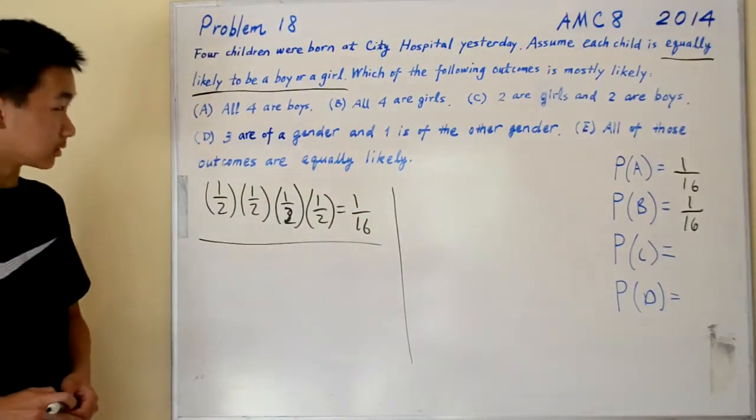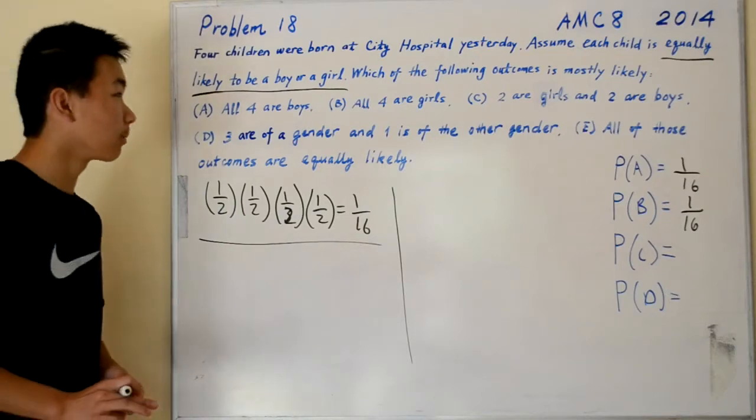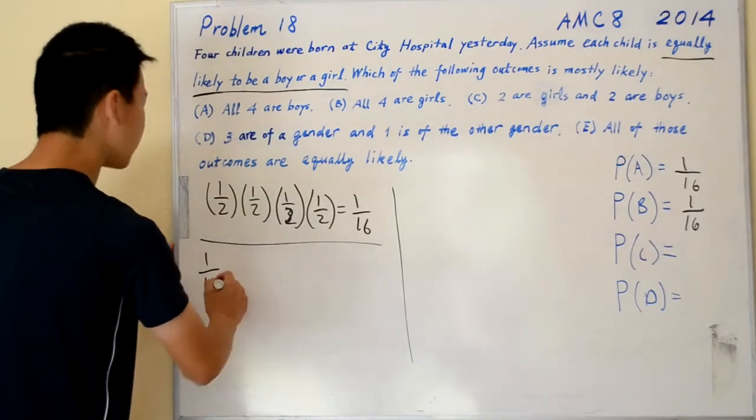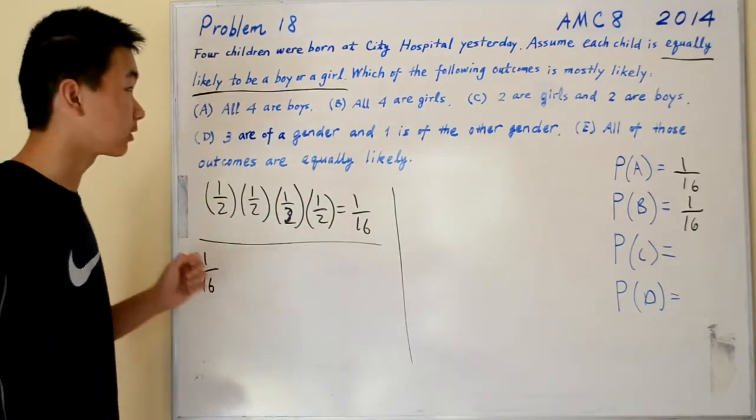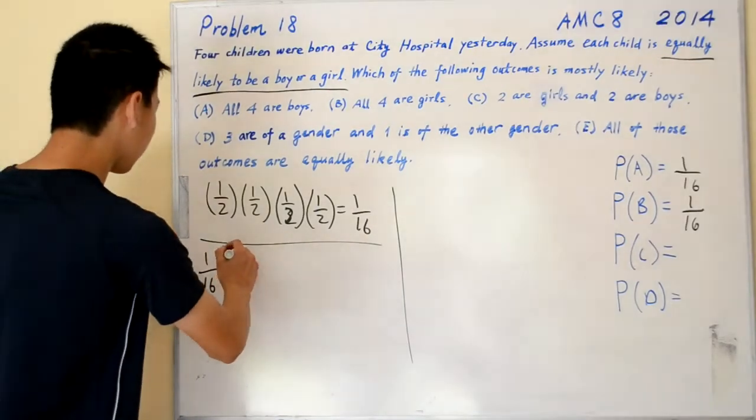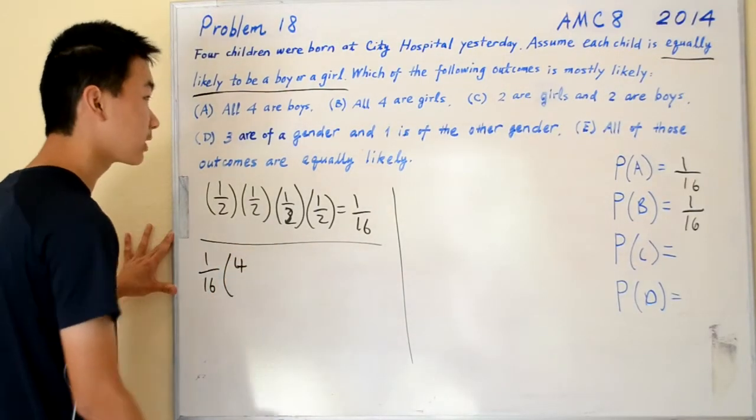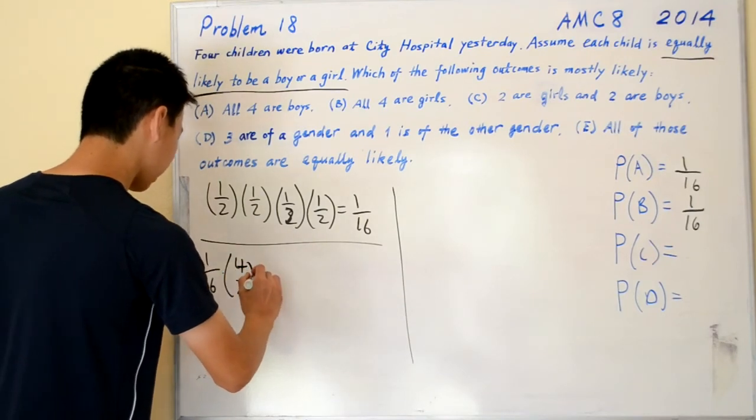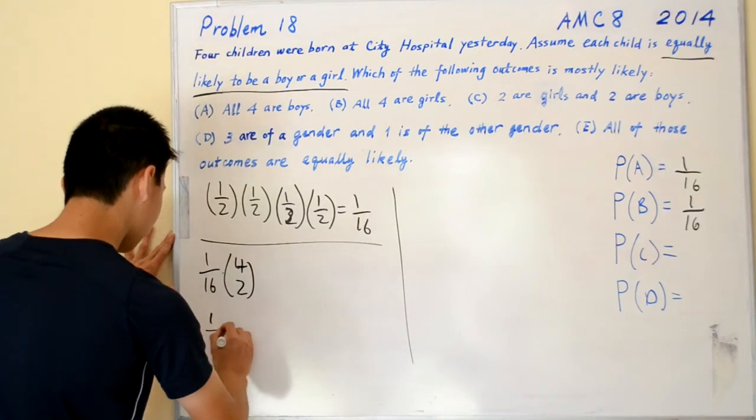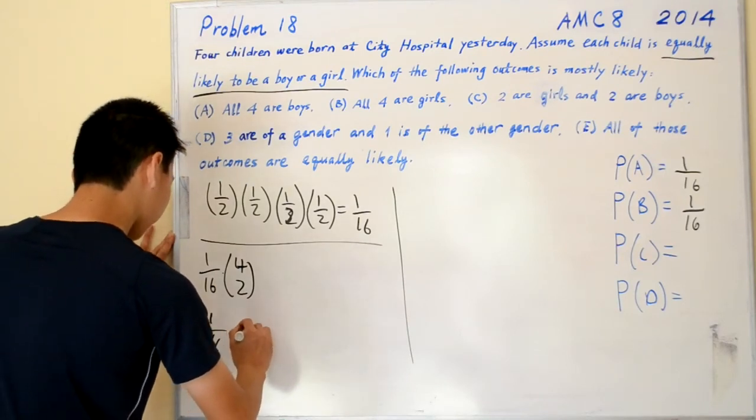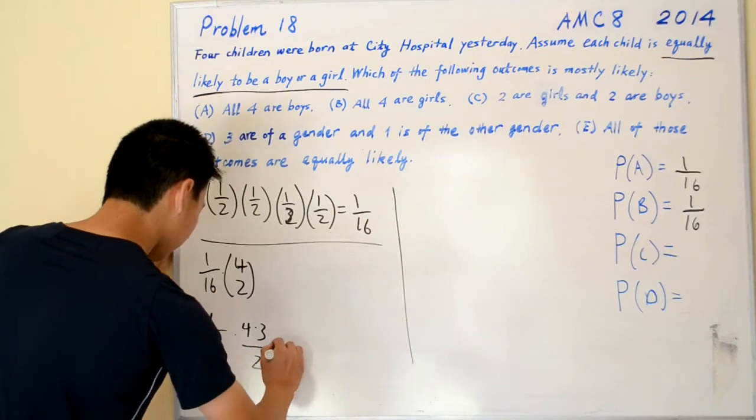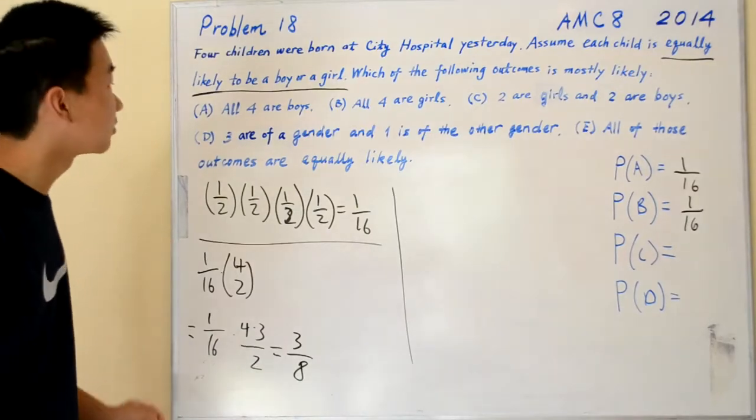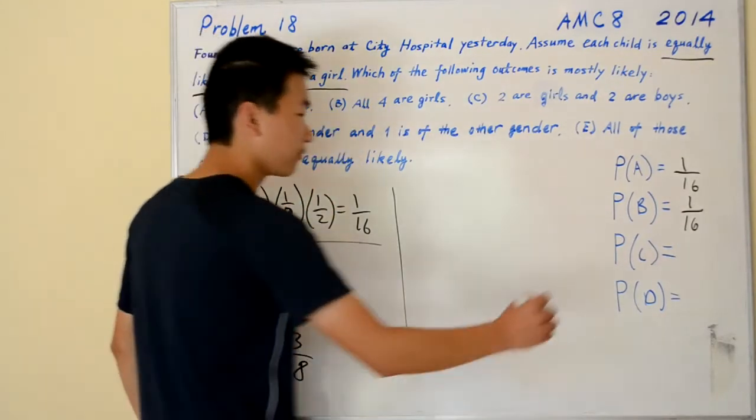Now we have choice C. Two are girls and two are boys. We start off with one over sixteen, because again, each child has one half probability to be either gender. Now we have to choose which two are boys and which two are girls. So that's four choose two. So it's just one over sixteen times four choose two. So that equals one over sixteen times four times three over two, which equals three over eight. So the probability of C is three over eight.